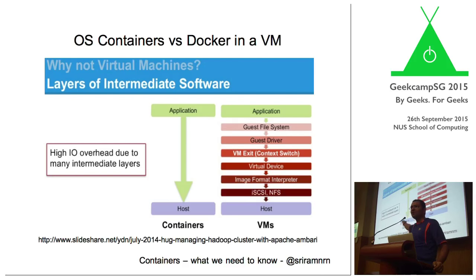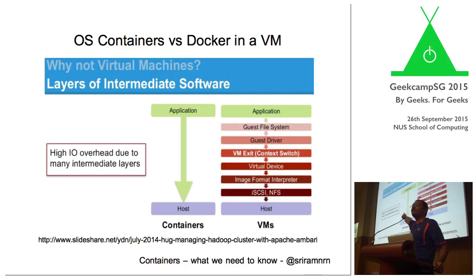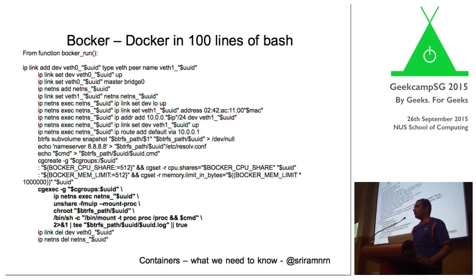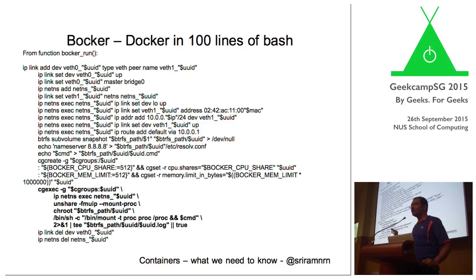In a virtual machine space, practically what happens is when you use just about anyone's container infrastructure out there, they actually end up running the Docker daemon, cgroups, and everything all in the same call stack. Where we say 'application,' you would actually have something else going on. It's the right kind of API calls firing to the Linux kernel.